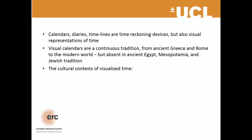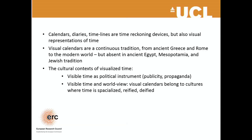We have also spoken about the cultural context of visualized time, and tried to explain how the profile of where you do find calendar tables — and where you don't — can be related to the broader culture within which these calendars are found. We spoke about visible time as a political instrument for publicity, for propaganda, for perhaps more subversive agendas — very prominent in the context of the Roman Empire, accounting to a large extent for the Roman calendar tradition. And we have spoken about visible time and world view, suggesting that visual calendars such as diaries, wall calendars, and so on belong to cultures where time tends to be spatialized, reified, and sometimes even deified.